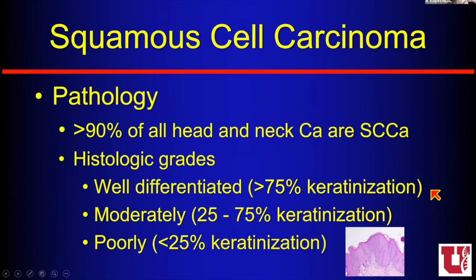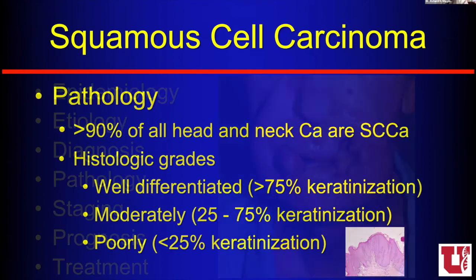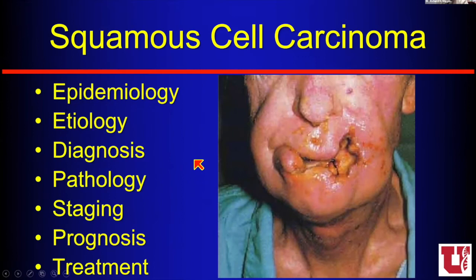We used to spend a lot of time talking about the different grades — well-differentiated, moderately differentiated, or poorly differentiated — thinking that would affect therapy, but we don't talk about that as much anymore in terms of changing chemotherapy, chemoradiation, or other therapies. Cancer itself is one huge issue. We have all these issues with epidemiology, cancer genes, and we look at many different ways to diagnose. The pathology is its own big discussion, so I'm going to focus on the imaging.